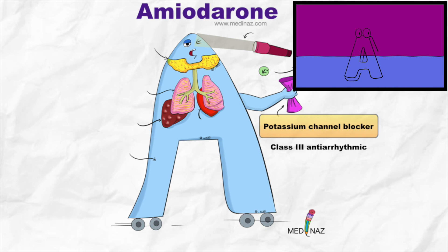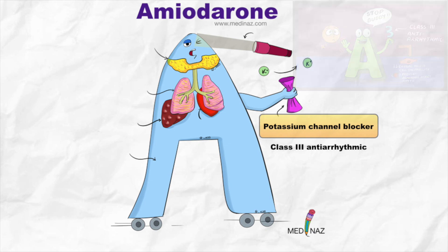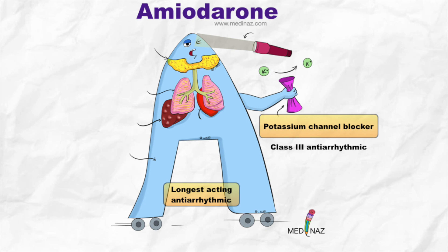I have already made a video on mechanism of action — click the i sign on the upper right corner or visit the description box to watch it. Now here you can see the skating wheels, which represents a long run or longest-acting property. Amiodarone is the longest acting anti-arrhythmic, with an average half-life of around 53 days.